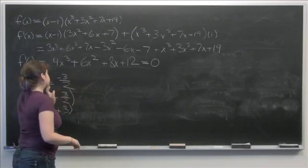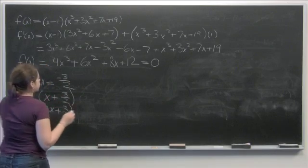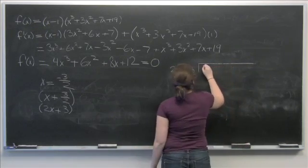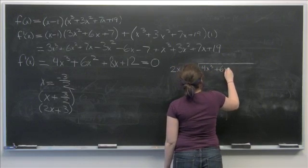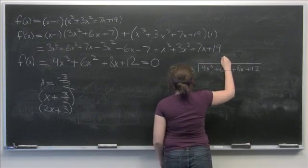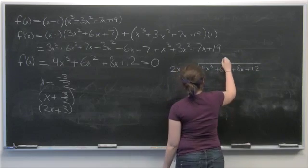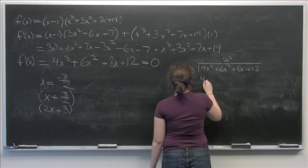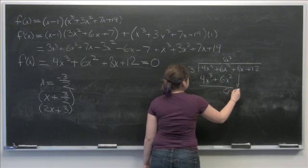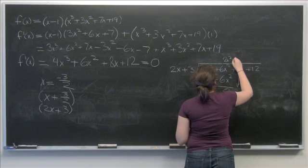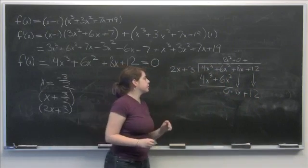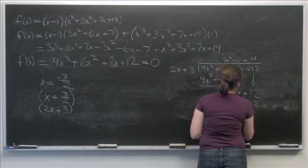If we do polynomial long division, pulling out (2x + 3) from 4x³ + 6x² + 8x + 12, we find it goes in 2x² times. That gives 4x³ + 6x², leaving 0 for the next term. Bringing down the 12, (2x + 3) goes into that 4 more times, giving 8x + 12. So the result is 2x² + 4.